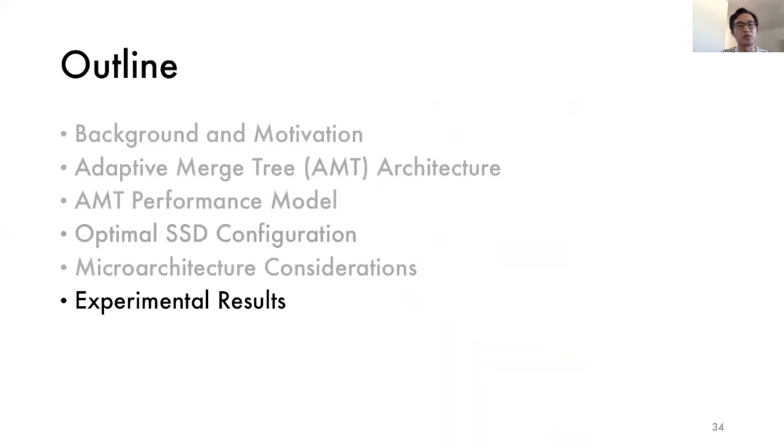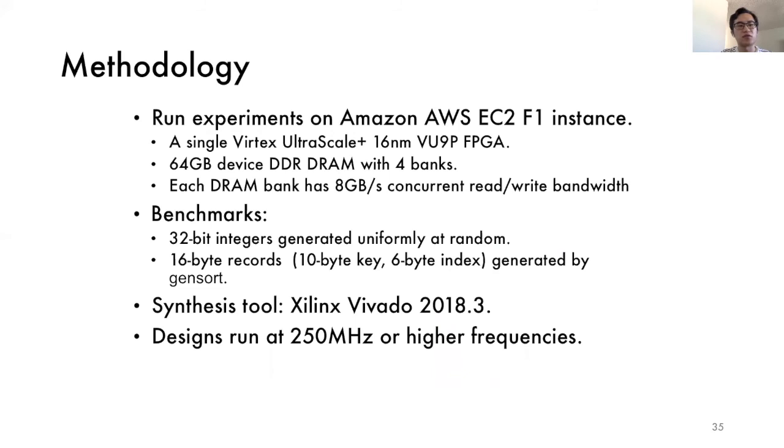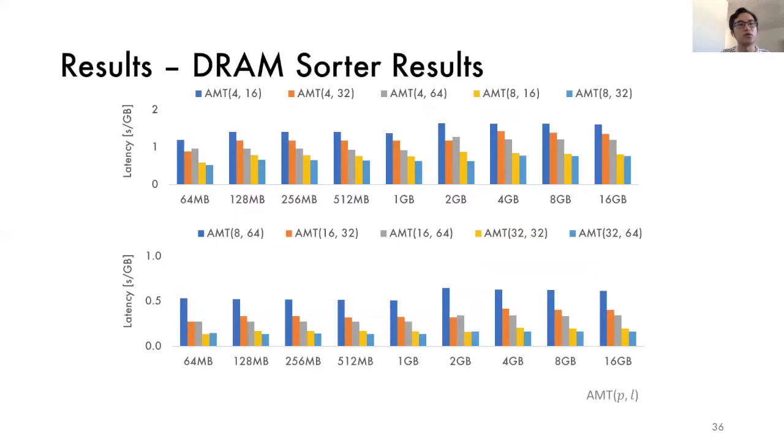Next, we will show the experimental results. We run our experiments on the Amazon AWS F1 platform, which is equipped with a single 16 nanometer FPGA and 64 gigabyte device DRAM. The DRAM has four banks. Each bank has roughly eight gigabytes per second concurrent read and write bandwidth. The main benchmark we use is 32-bit integers generated uniformly at random. We also use 16-byte records to check the scalability of the record width. Our designs can run at 250 megahertz or even higher frequencies. We ran a lot of experiments with different DRAM configurations and different merge trees correspondingly.